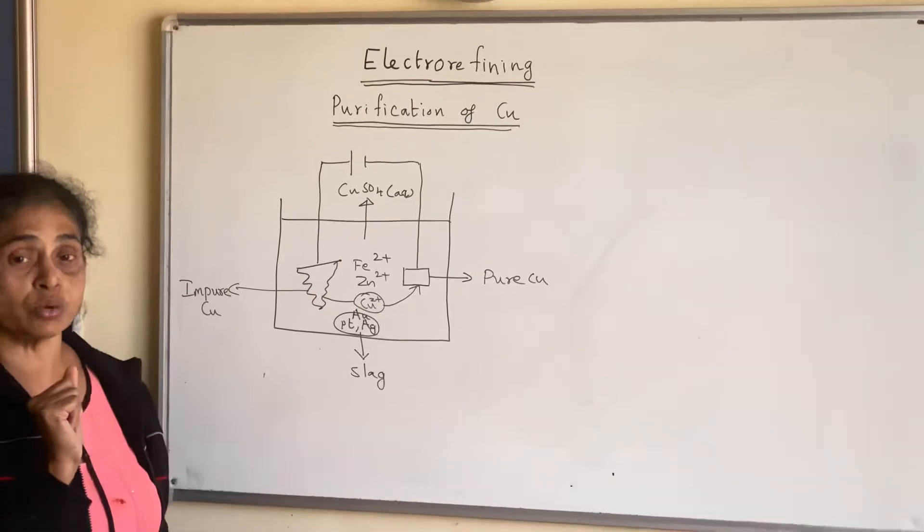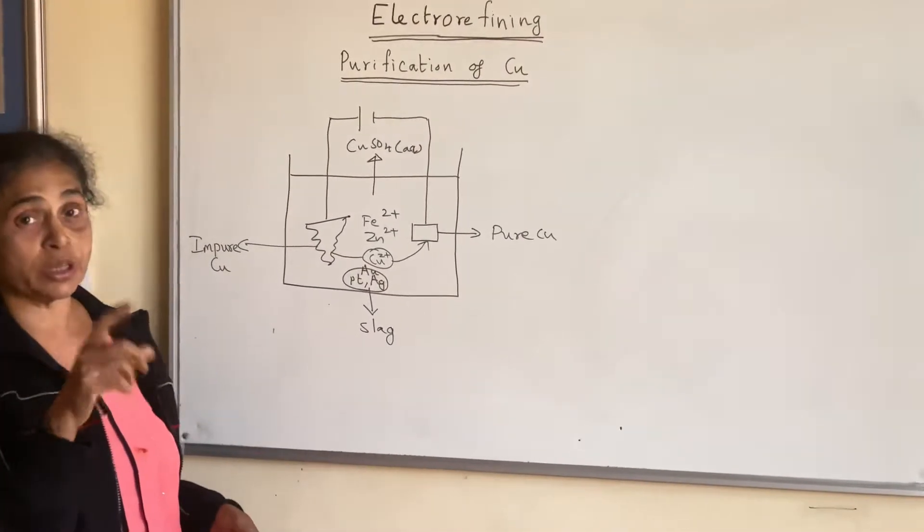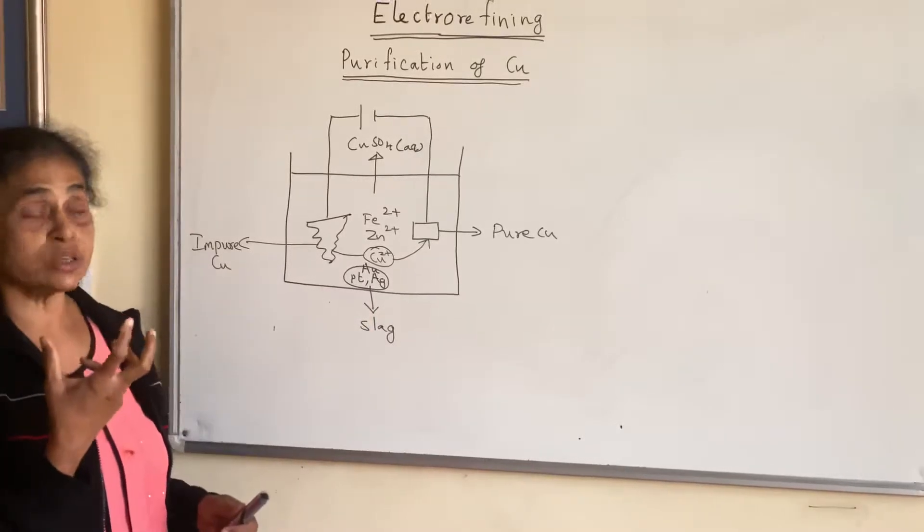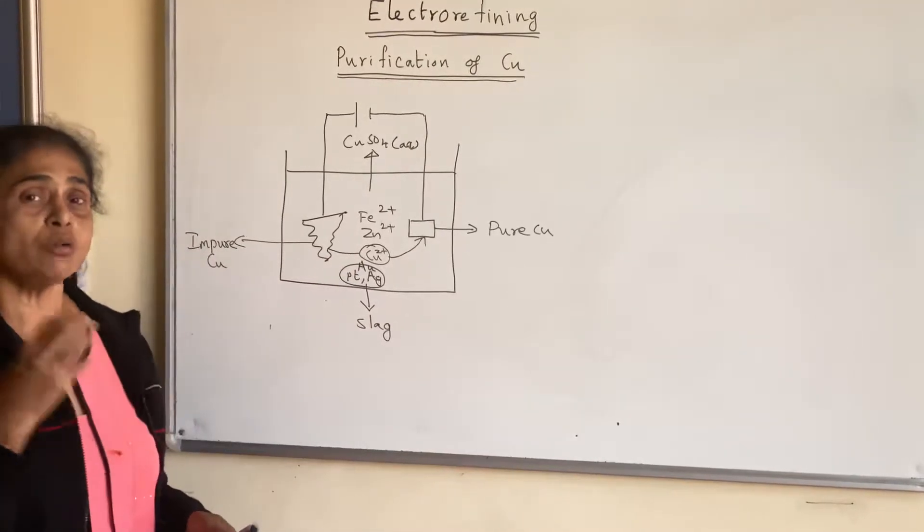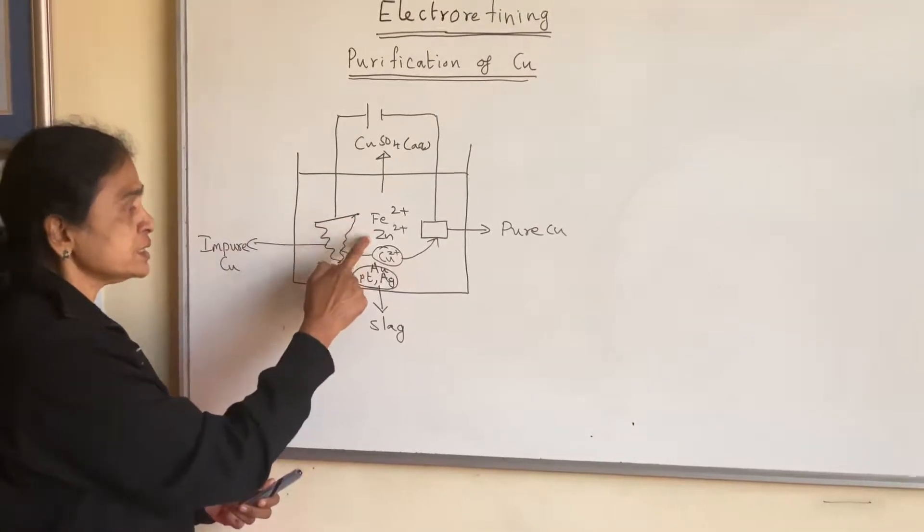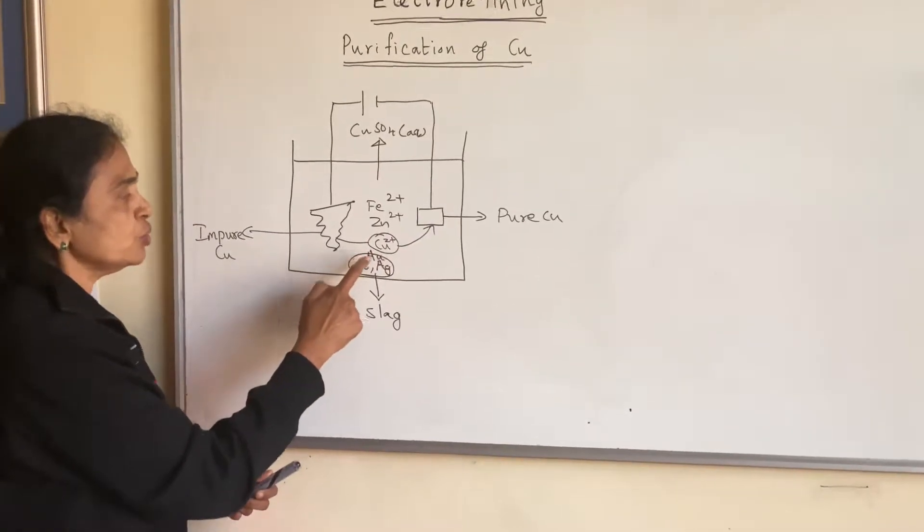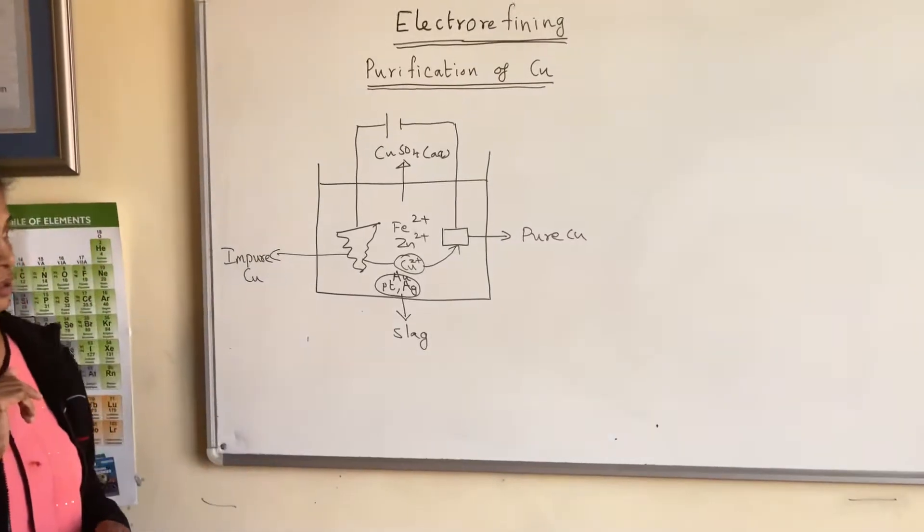Telecom and ESCOM need pure copper for their cables. So in that case, what we have to do is get the pure copper to supply to them. How to purify that? So it has got other elements like iron, zinc, platinum, gold, and silver.